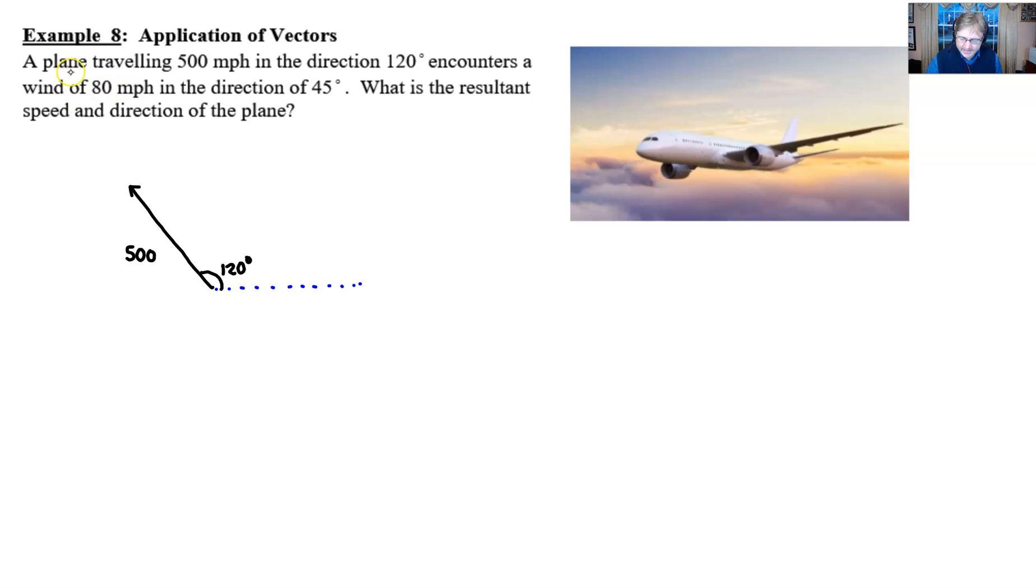Now, the problem is that we've got an 80 mile per hour wind, that's a pretty heavy wind, in the direction of 45 degrees. Well, we know that 45 degrees is right about here. I could draw this vector right here. I'm going to draw that vector just like that, try to make it about 80 in length.